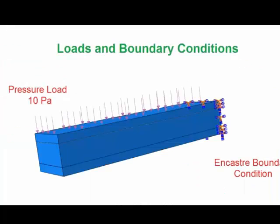All three layers of the sandwich structure will be fixed at one end, making it a cantilever. A uniform pressure load of 10 N per meter squared, or 10 Pa, will be applied on the top surface, causing the structure to bend downwards.